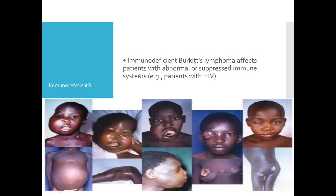Immunodeficient Burkitt's lymphoma affects patients with abnormal or suppressed immune systems, such as patients with HIV. In this set of images, you can see Burkitt's lymphoma affecting the jaw unilaterally, the jaw bilaterally, the abdomen, the eye, and the breast.